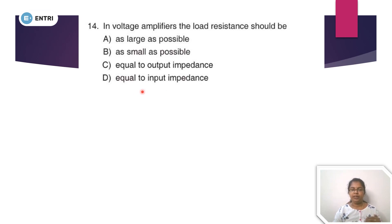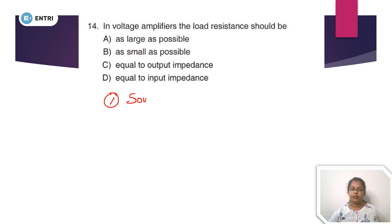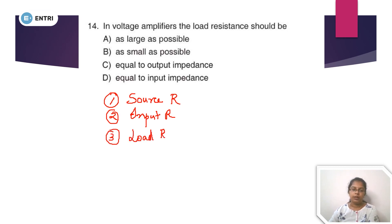Now let me explain the resistances in an amplifier circuit. There are 4 types of resistances: source resistance, input resistance, load resistance, and output resistance.